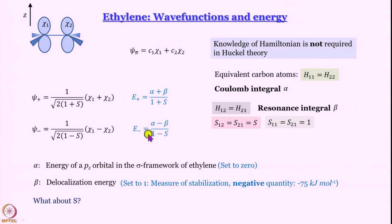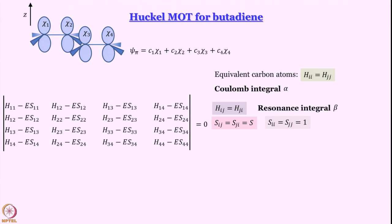No need to remember this value. What is important to remember is beta is a negative quantity. And we discussed very briefly what we do with S. With that background let us go over to butadiene.